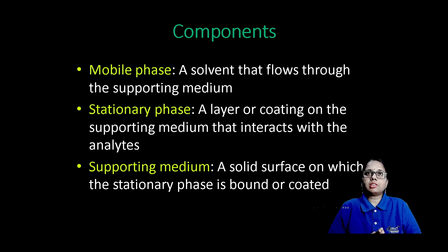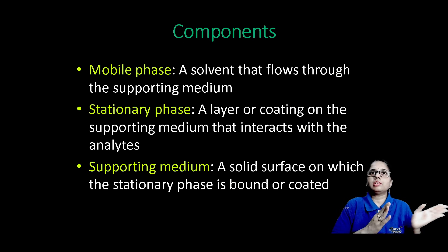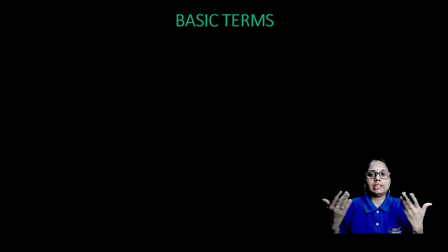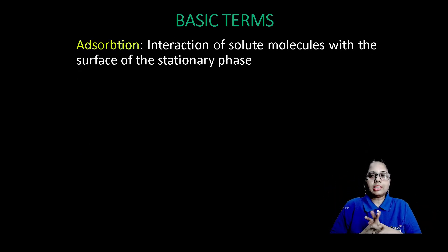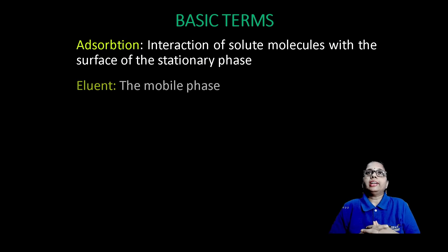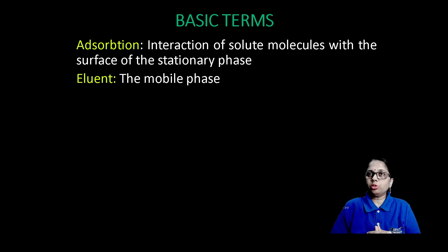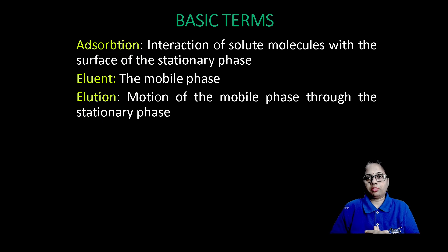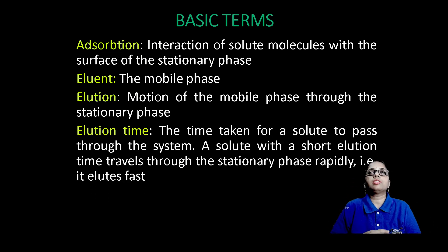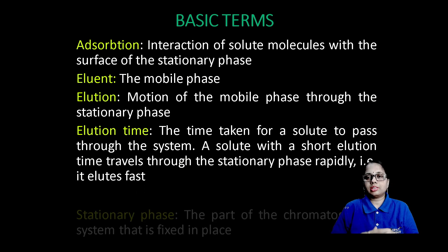Mobile phase means a solvent that flows through the supporting medium. Stationary phase means a layer of coating on the supporting medium. Supporting medium means a solid interface. Basic terms used in chromatography include adsorption, which is the interaction of the solute molecules with the surface of the stationary phase. The eluent is the mobile phase, and elution is the motion of the mobile phase through the stationary phase.